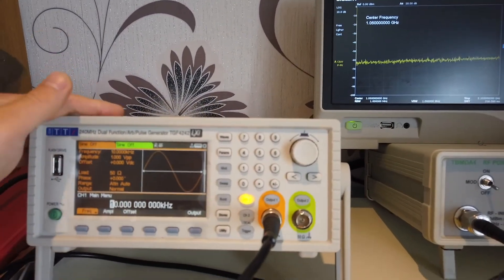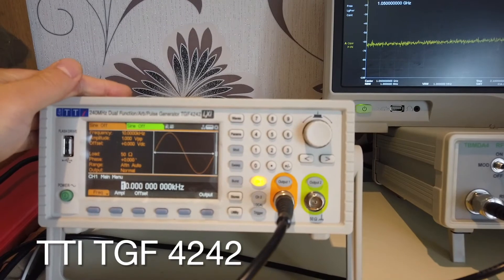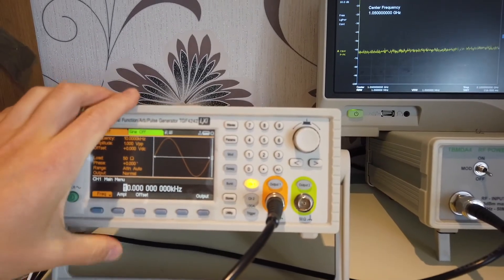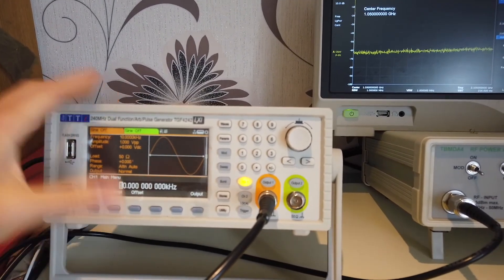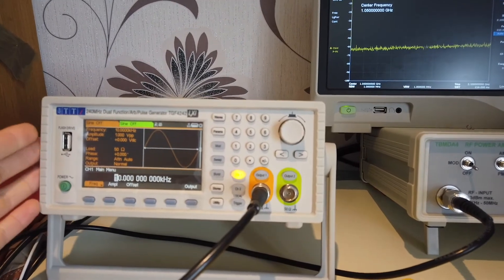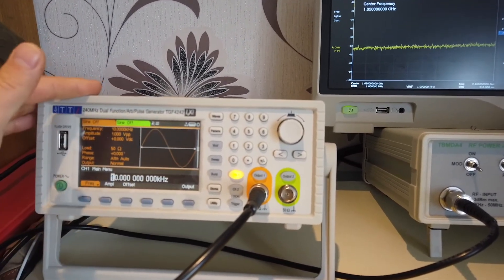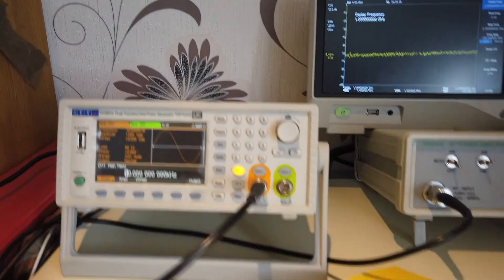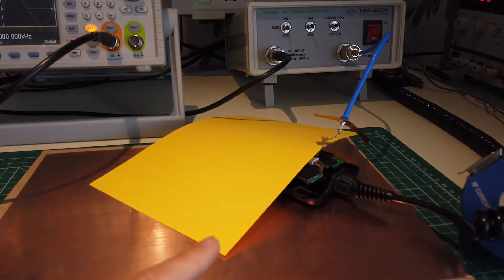Okay, so the signal generator I'm using is TTI 240 MHz signal generator. In this case, I'm going to do a sweep between 5 MHz and 10 MHz because that's the range that this module is quite susceptible to.